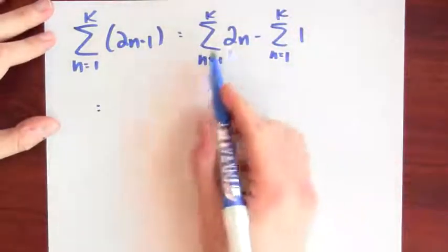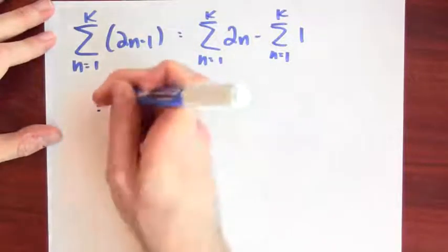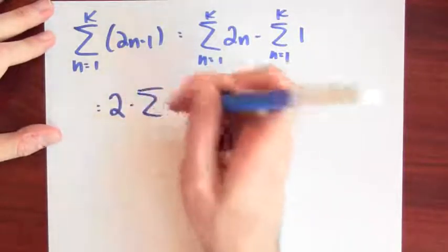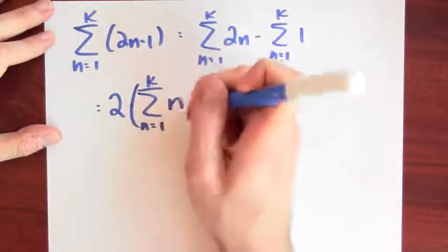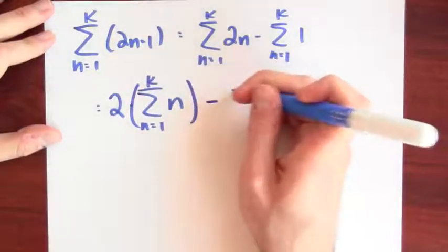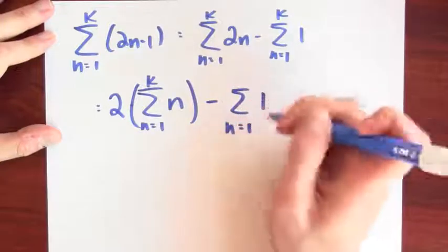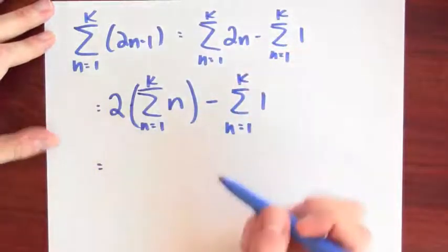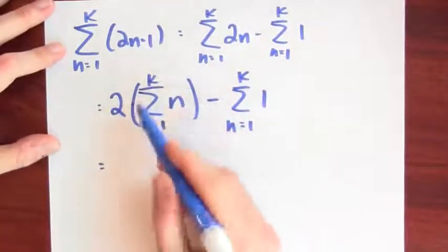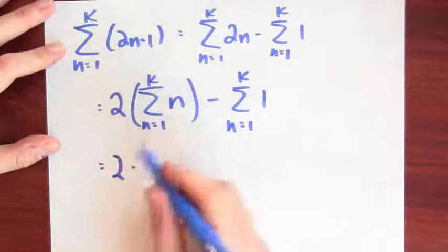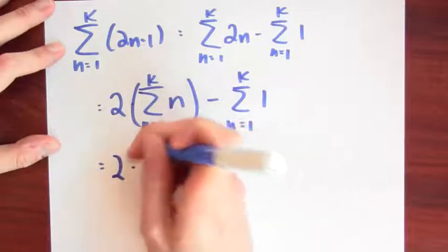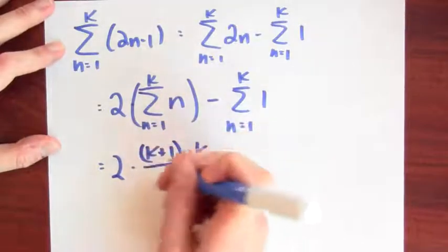Now I can pull out this factor of 2 by distributivity, so this is 2 times the sum of n as n goes from 1 to k minus just the sum of 1, n goes from 1 to k. I'm going to use a formula for the sum of just the first k whole numbers. And if you remember back to that formula, that's k plus 1 times k over 2.